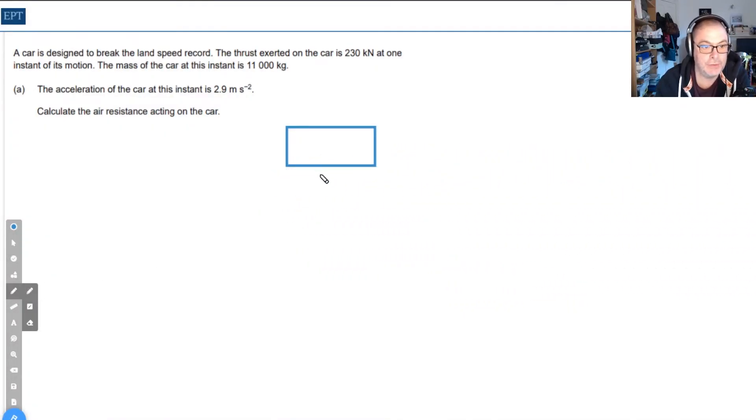The first task is to work out the air resistance acting on this car attempting to break the land speed record. We know there's a forward driving force of 230 kilonewtons, and there must also be air resistance pushing backwards.